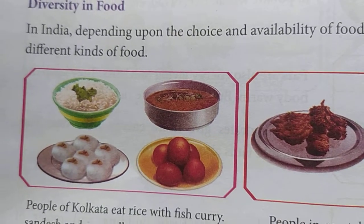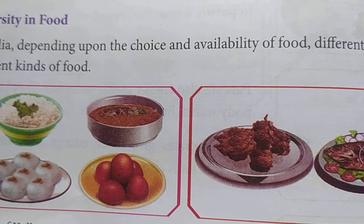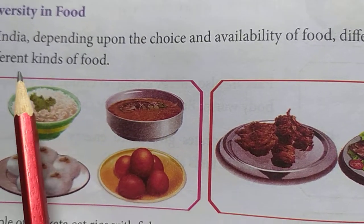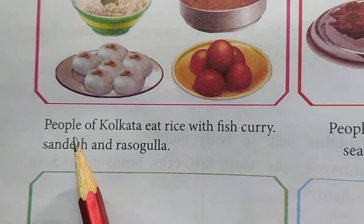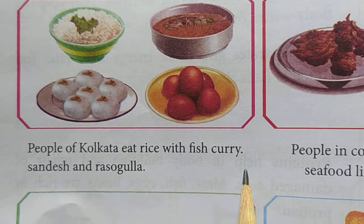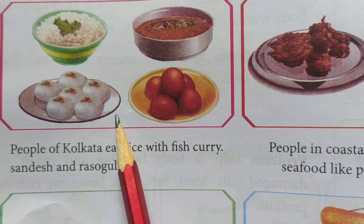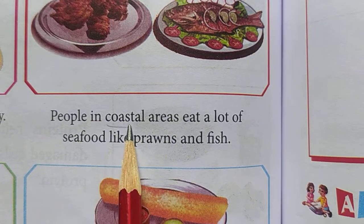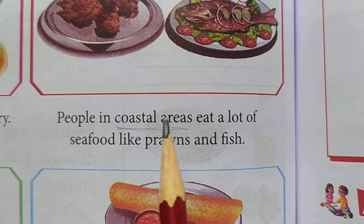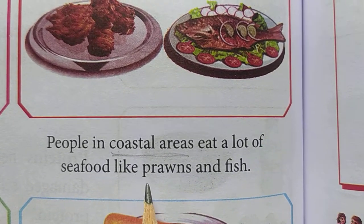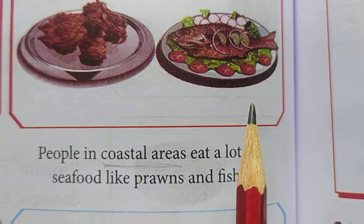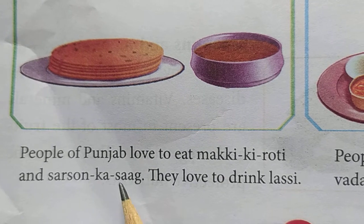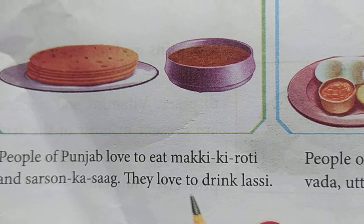Diversity in food means in India, depending upon the place and availability of food, different people eat different kinds of food. For example, people of Kolkata eat rice with fish curry, sandesh, and rasgulla. People in coastal areas like to eat prawns and fish. People of Punjab love to eat makki ki roti and sarson ka saag, and also love to drink lassi.